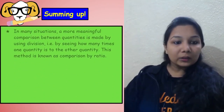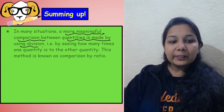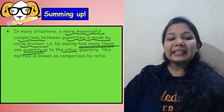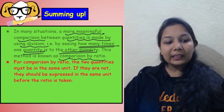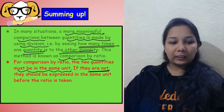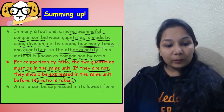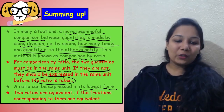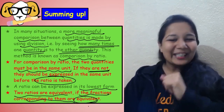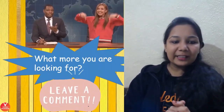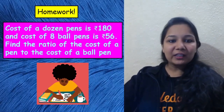Let's summarize what we learned today. A meaningful comparison between quantities using division — how many times one quantity is of another — is called comparison by ratio. For ratio, units should always be the same; if not, convert them first. A ratio can also be expressed in its lowest form. Two ratios are equivalent if the fractions corresponding to them are equivalent. Revise everything — I'll see you in the next class. Let me know in the comment box what more you're looking forward to.